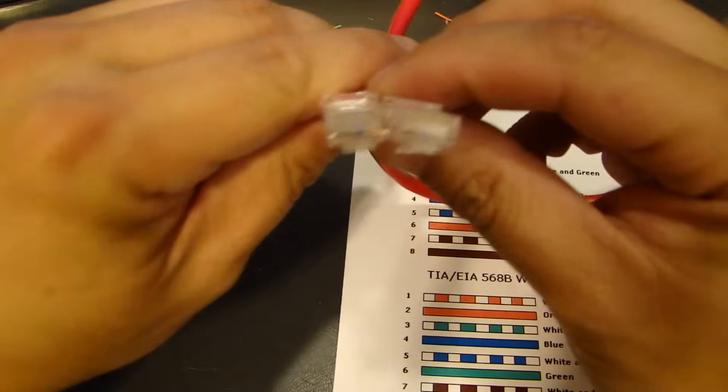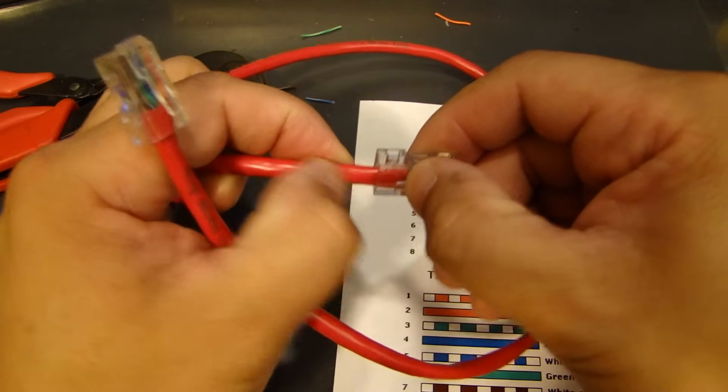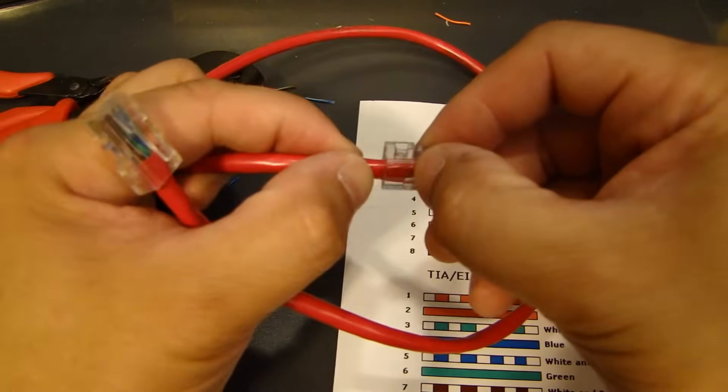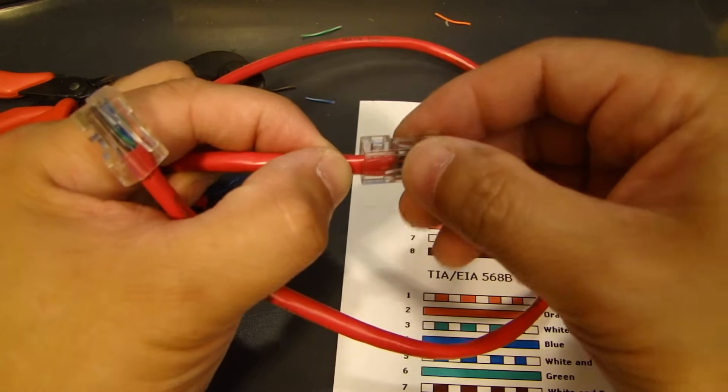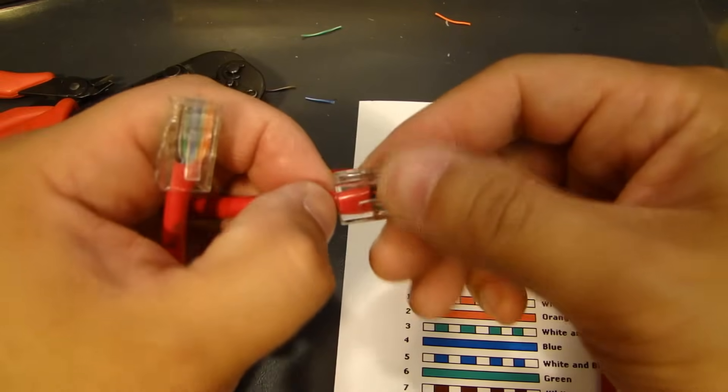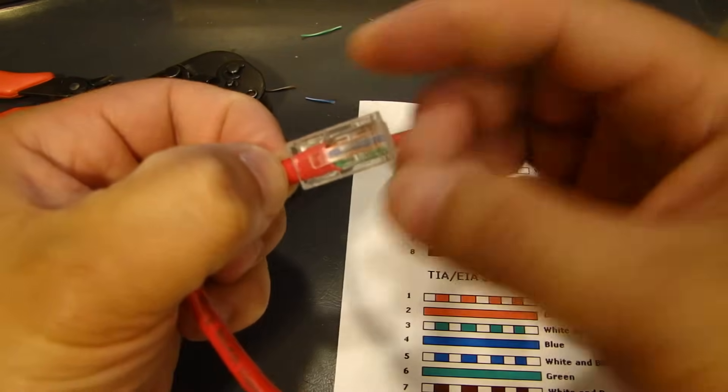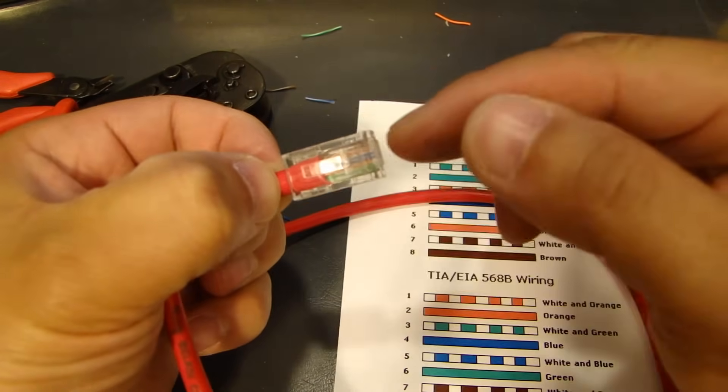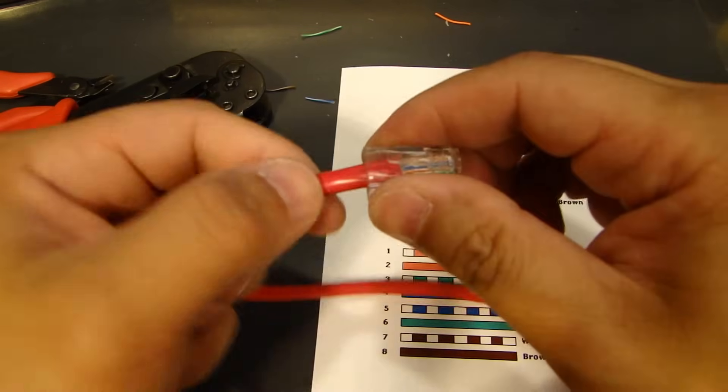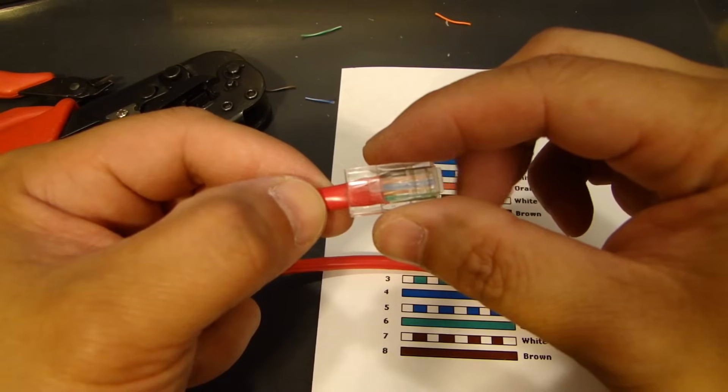Now, a couple of things I want to point out. After you crimp it, you should do an inspection on it. Again, one is that the jacket, the insulator on the wire is seated in. Because this adds strain relief to the cable when it's plugged in. I've seen it where some people make a cable where the jacket is actually completely out. So, the whole tension of this cable is held in by the pins here. And the weight of the cable will actually cause some of these wires to come loose.